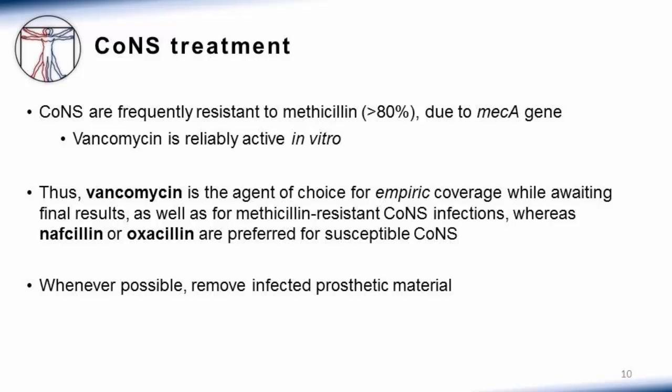If you've established that your patient has a real coag negative staph infection that merits treatment, you would usually start with vancomycin. Coag negative staph are frequently resistant to methicillin more than 80% of the time, usually due to having the mec-A gene conferring methicillin resistance. So vancomycin is the agent of choice for empiric coverage. When the lab calls with gram positive cocci in clusters, you may not yet know the susceptibility profile, and you don't want to wait two to three days before initiating therapy — so you pick vancomycin for empiric coverage. If it's methicillin resistant, continue vancomycin for the duration of therapy.